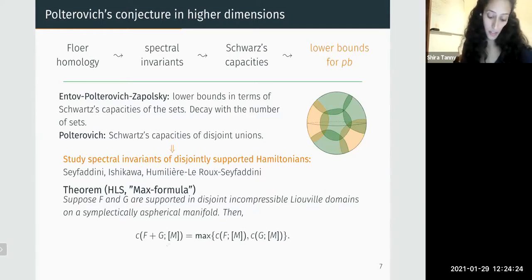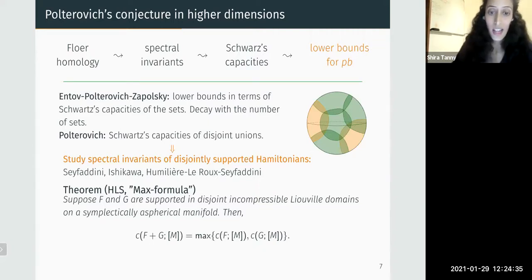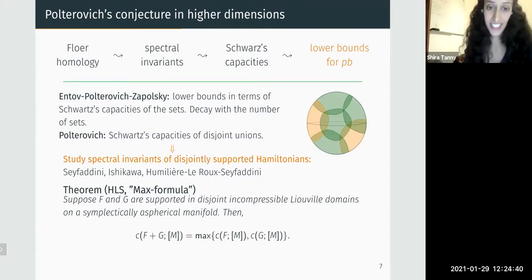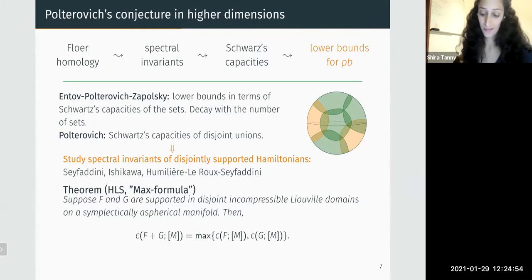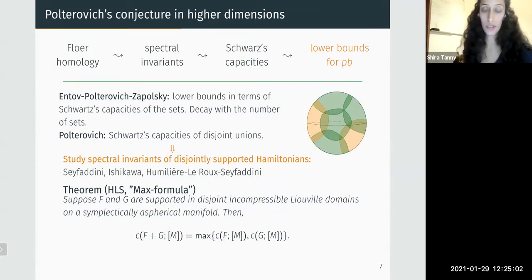The asphericity assumption is crucial here — this statement is not true in non-aspherical manifolds. I'll say more about that shortly. In light of these results and taking a broader perspective, we thought it would be interesting to study the Floer complex and differential of disjointly supported Hamiltonians in order to derive new understandings of spectral invariants of such Hamiltonians.